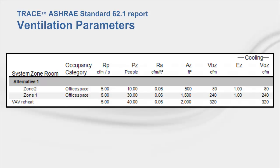In the TRACE 62.1 report, the Zone Ventilation Parameters section will display the calculated V sub BZ and V sub OZ values for each zone in the Cooling and Heating mode. In this report, you can see that TRACE calculated V sub OZ for Zone 1 to be 240 CFM and Zone 2 to be 80 CFM, which aligns with our hand calculations.